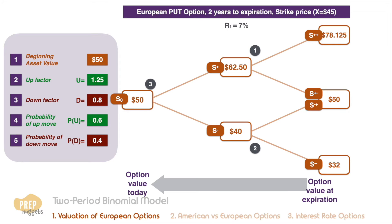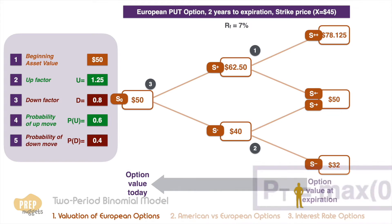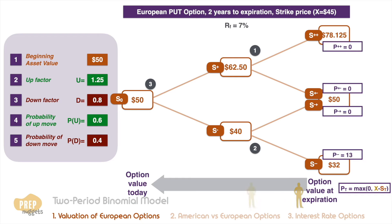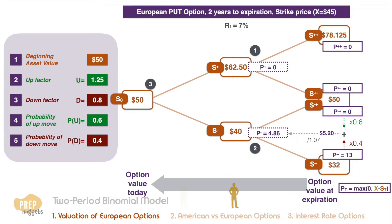Likewise, we can use the same approach for put options. Now it's your turn to practice: value the equivalent put option with strike price at 45 dollars using the two-period binomial approach. You should find this considerably less tedious than for the call option, as many of the values are zero. The first node will simply be zero as well. The value for the second node works out to 4.86. Repeating the steps for the current node, we get a value of 1.817 for the put option.